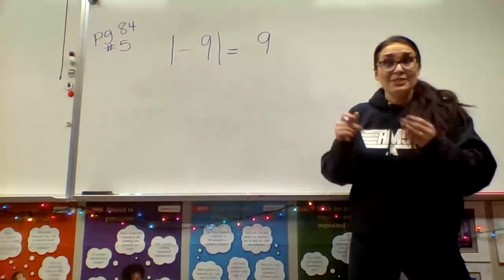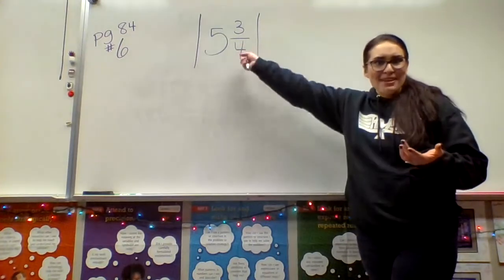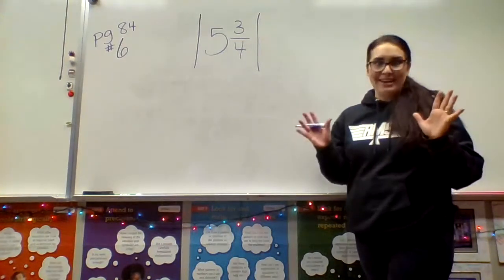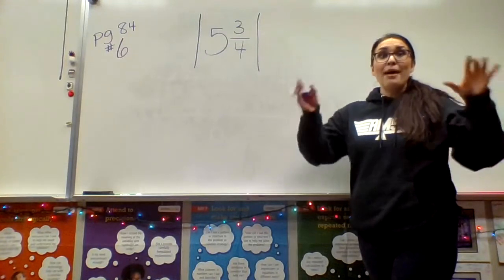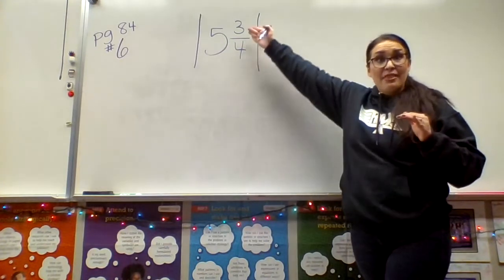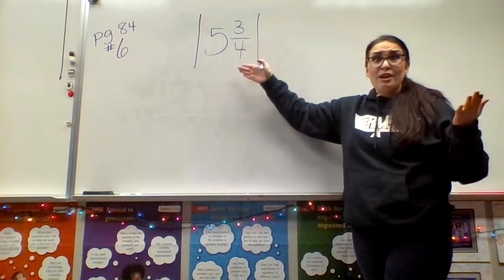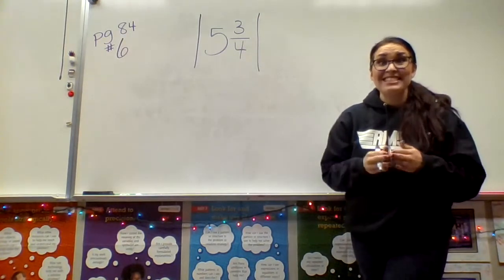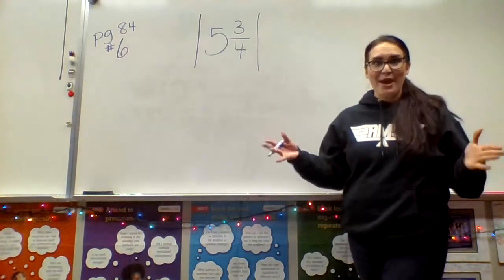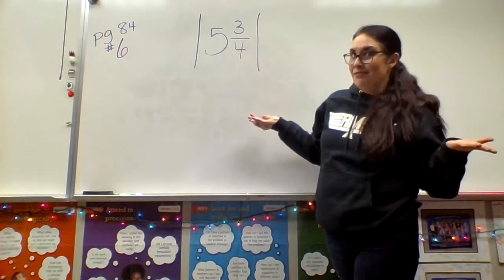Let's look at number six on page 84. It's asking for the absolute value of a mixed number. Please don't let mixed numbers, improper fractions, or decimals throw you off — we're just asking for distance. Imagine plotting this on a number line like in lesson 2-2. This is a positive five and three-fourths, and how many spots away from zero is that? It's still five and three-fourths. Absolute value just gets to the distance from zero. So the absolute value of five and three-fourths is just five and three-fourths.